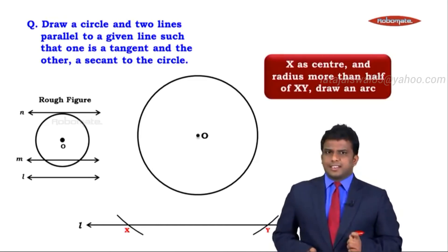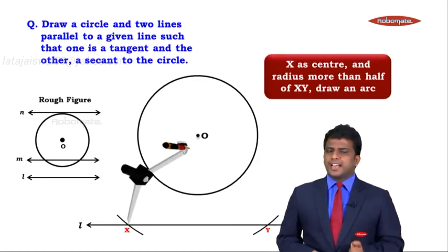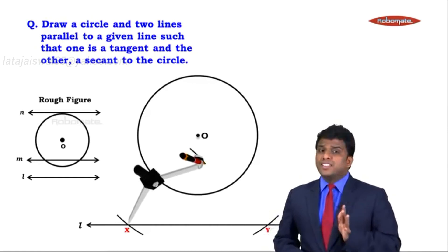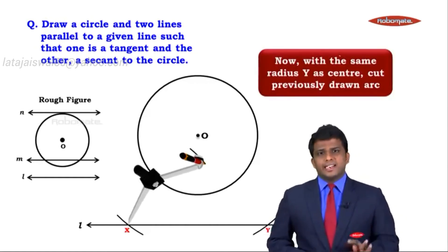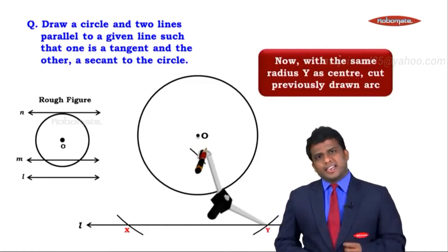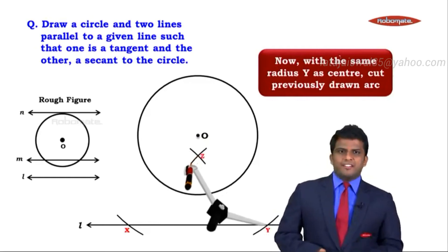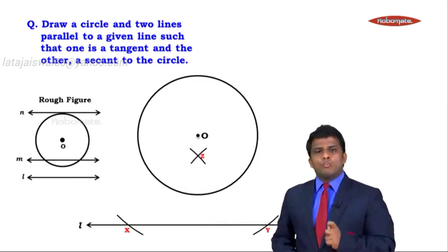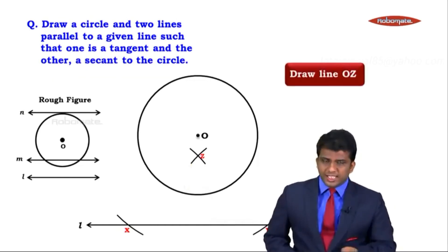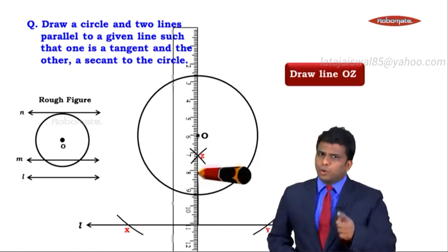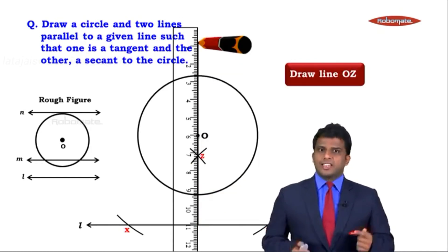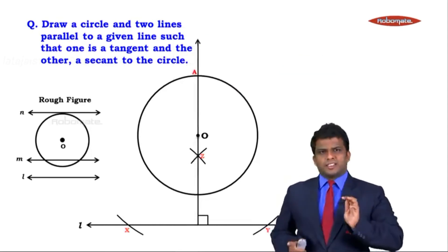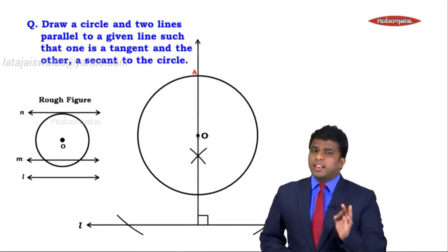Taking X as center, with radius more than half of XY, we cut an arc. With the same radius, we place the pointer at Y and cut an intersecting arc, giving us a distinct point Z. We then draw line OZ, which is the perpendicular from center O to line L. Don't forget to mark the perpendicular symbol.